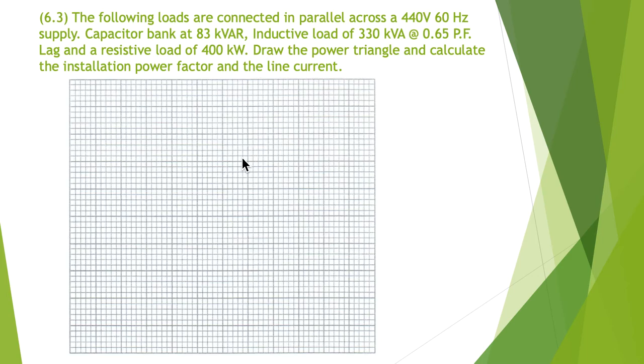6.3. The following loads are connected in parallel across a 440 volt 60 hertz supply. Capacitor bank at 83 kVAR, inductive load of 330 kVA at 0.65 power factor lag, and a resistive load of 400 kilowatts. Draw the power triangle and calculate the installation power factor and the line current.